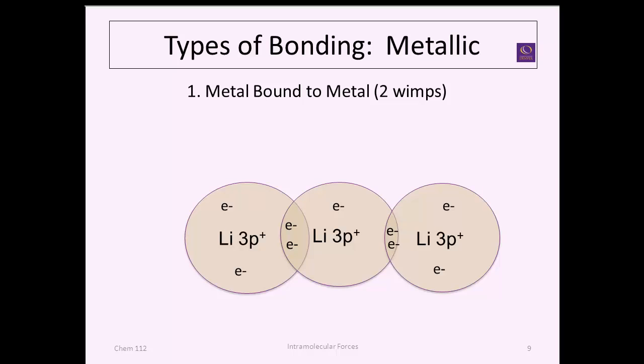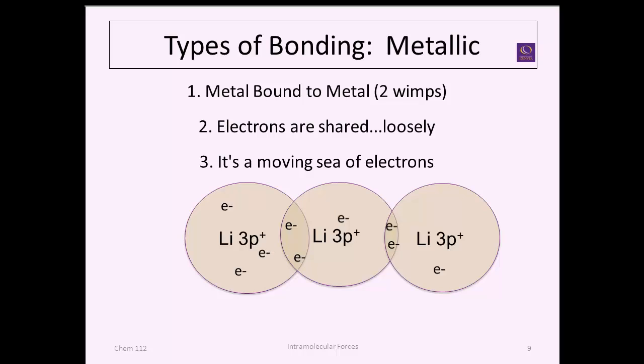The final type of bonding is metallic. Now we have two losers, things that easily lose electrons, metals. You put those together, and once again you can imagine that they're able to share electrons, but in this case they don't share them tightly. The electrons are shared, but they're shared loosely so they can easily start moving in and out of those bonds. As this graphic depicts, the electrons can move in and out, and are sometimes described as a moving sea of electrons.